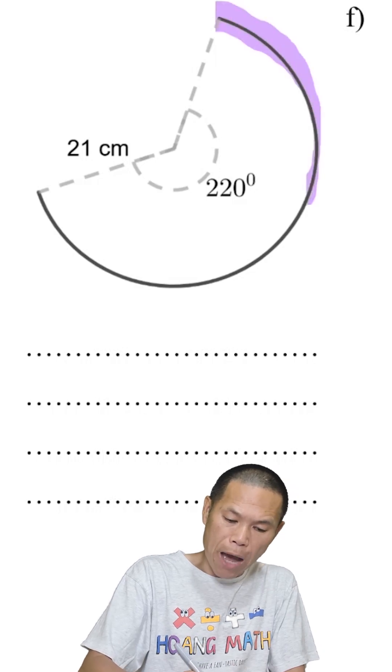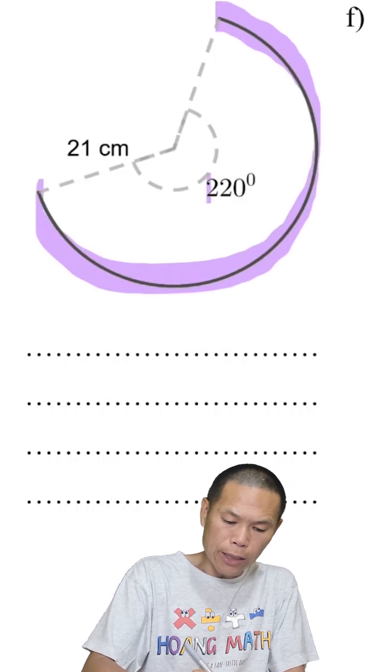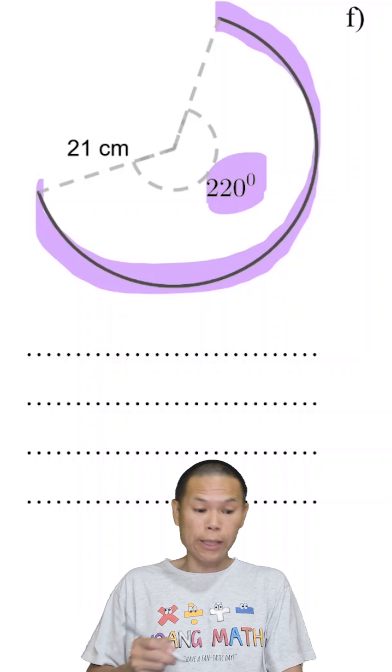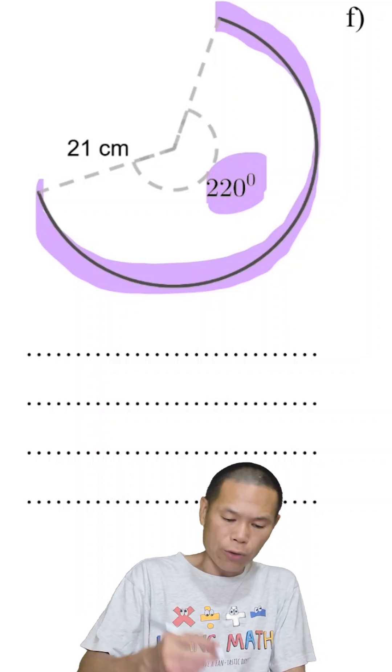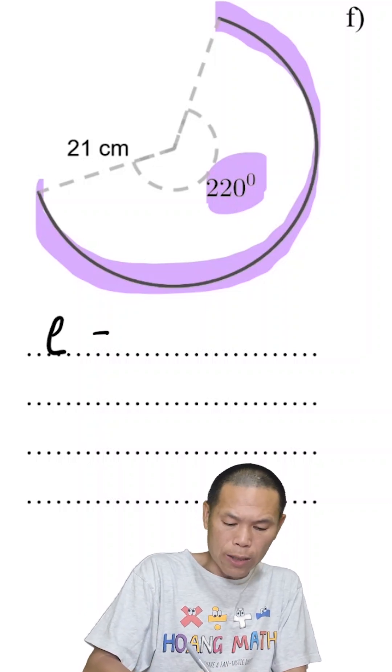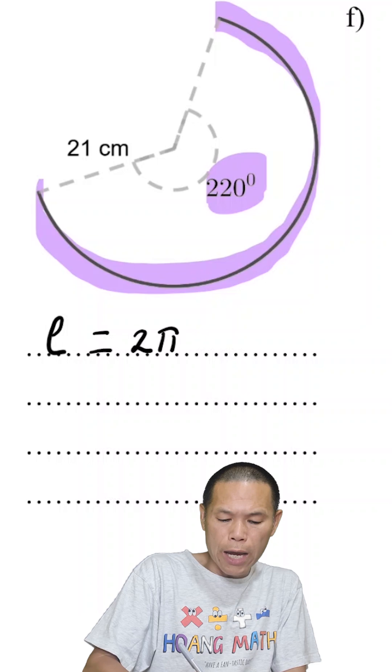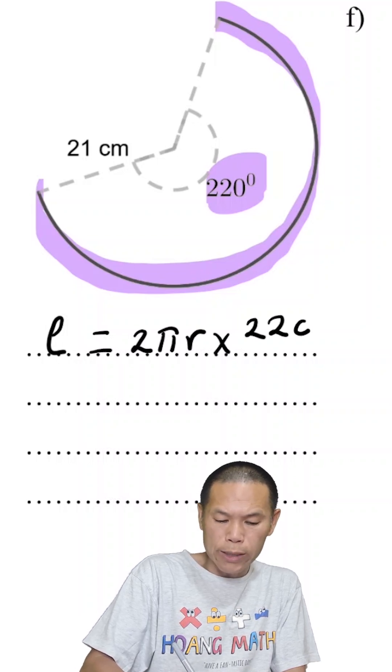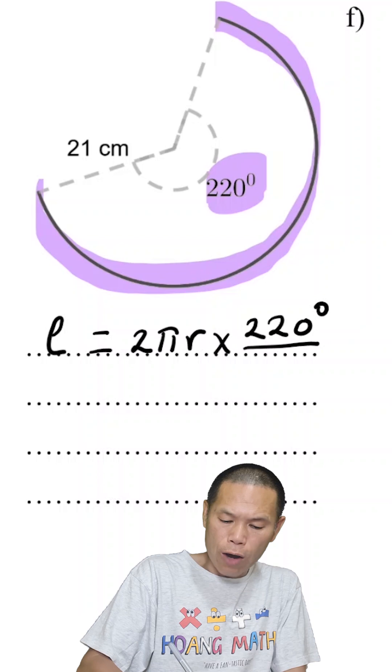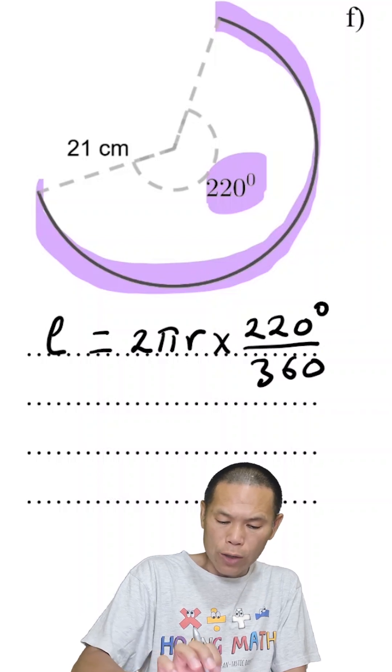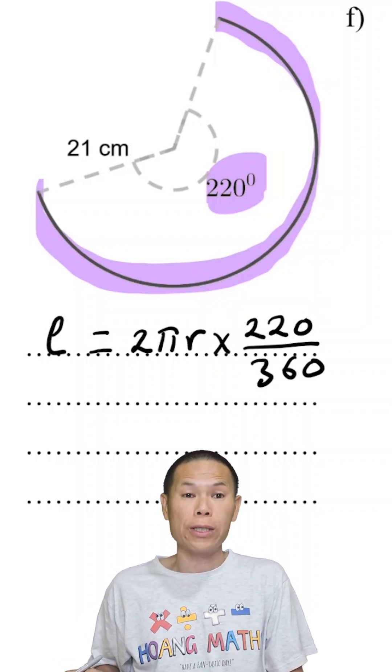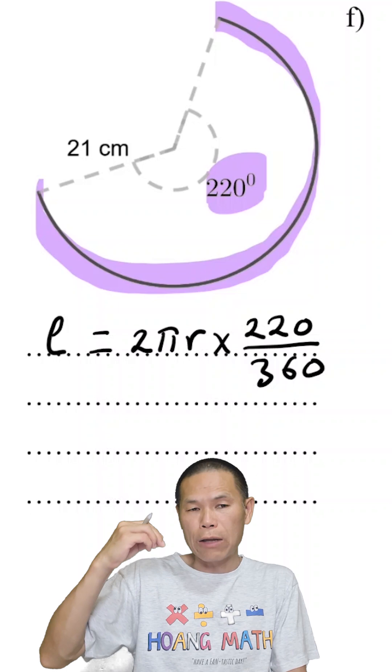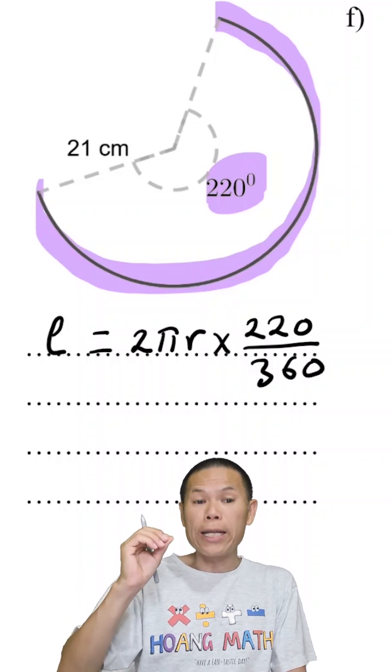We only need to find part of the circle, so that is 220 degrees. Let me write out the rule first. L equals 2πr times by 220 degrees out of 360, or just write 220 of 360. We just need to work out the fraction of it. Now the radius is